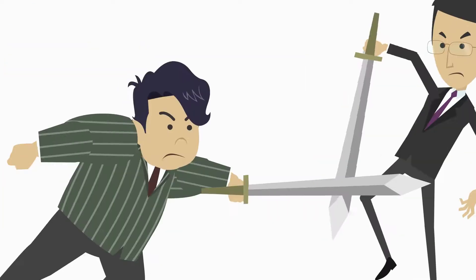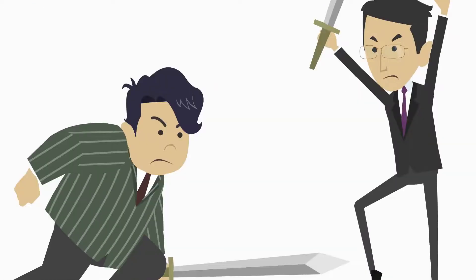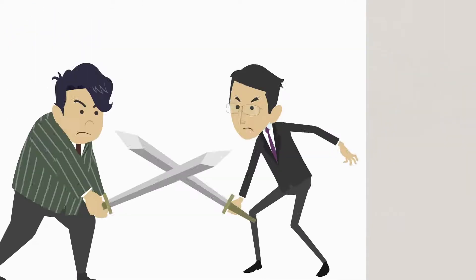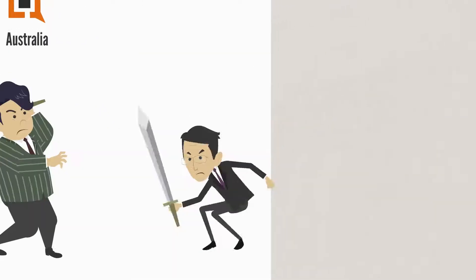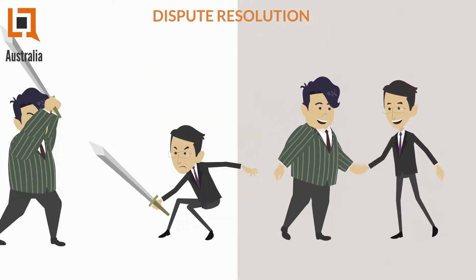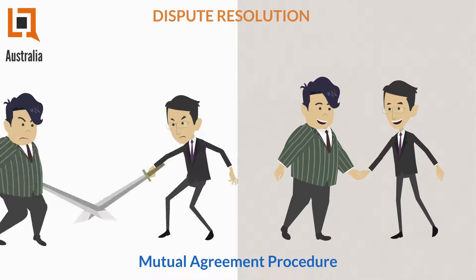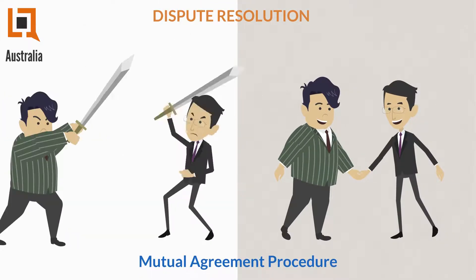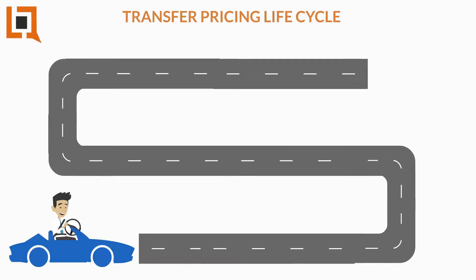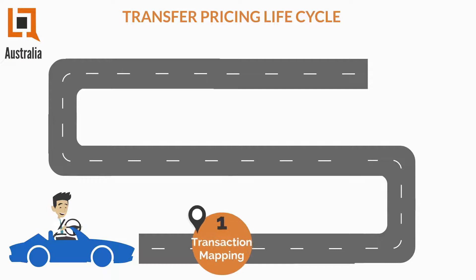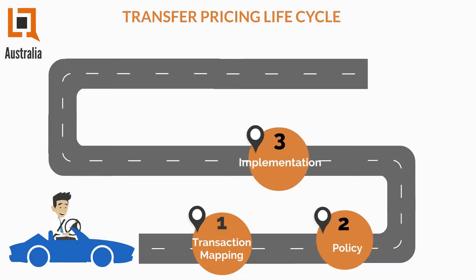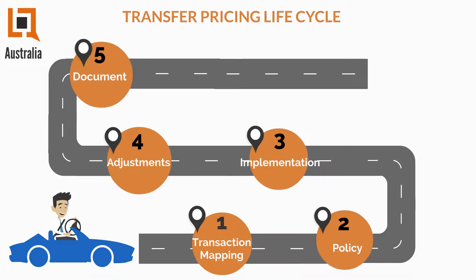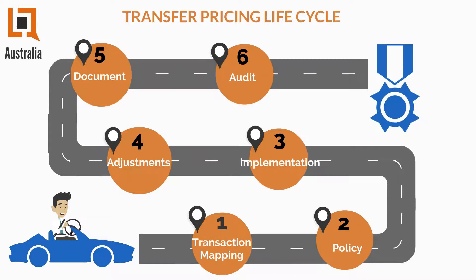To avoid double taxation, companies can also make an application to the competent authorities of their countries for dispute resolution. To ensure your company is always compliant with all transfer pricing regulations, it is important to make a robust transfer pricing lifecycle strategy.